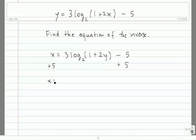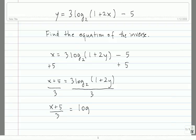So we get x plus 5 equals 3 log base 2 of 1 plus 2y. The next thing we need to do is divide both sides by 3 to get rid of this 3 out front here. So we have x plus 5 divided by 3 is equal to log base 2 of 1 plus 2y.